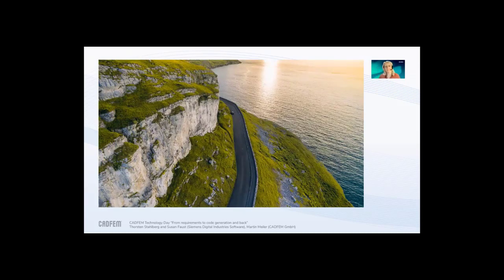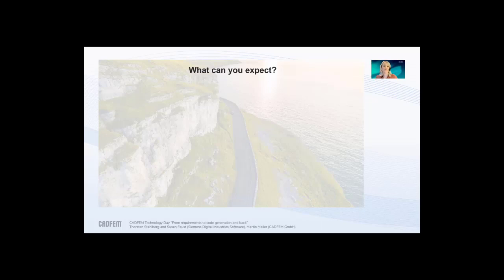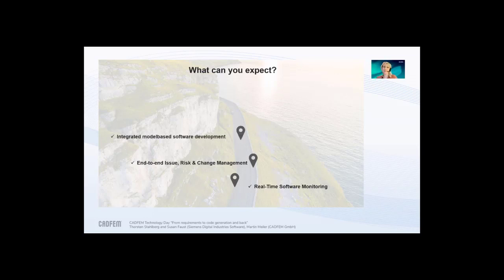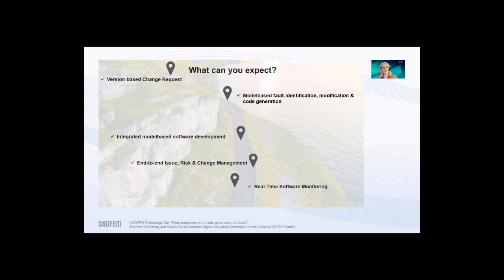Welcome everyone. We'd like to take you today on a road trip. In the first step, we'll start with real-time software monitoring. After identifying an issue in our software, we'll go through an end-to-end process from the issue through risk into a change management start. We'll then move into an integrated model-based software development process, reaching model-based fault identification, modification and code generation, and finally arrive at a version-based change request to finish our trip. Throughout, we'll see full traceability from requirements to model to code and back.